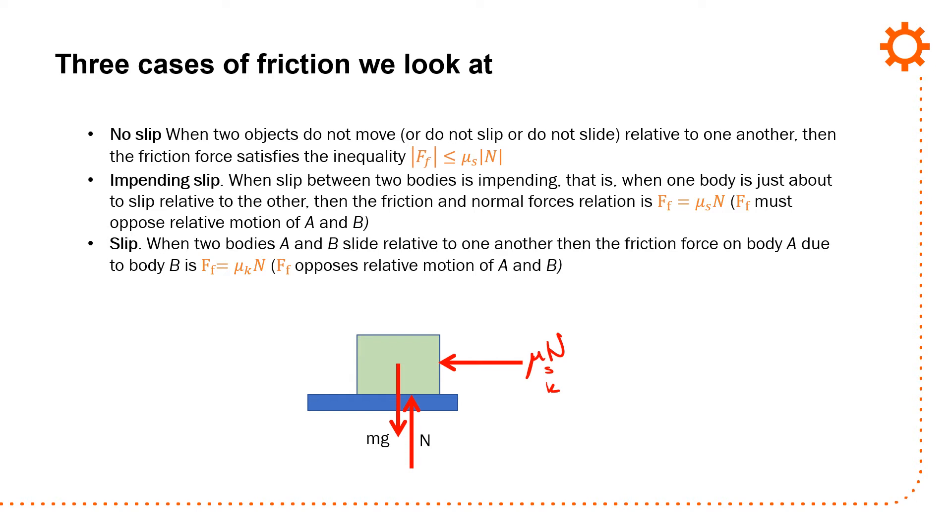With impending slip, the two bodies are just about to move. The force of friction equals mu_s times N, and always opposes motion. If I push in this direction, friction opposes. Finally, when two bodies slide relative to one another, the friction force on body A due to body B is mu_k times N. The difference is it's k now - it goes from static friction to kinetic friction.